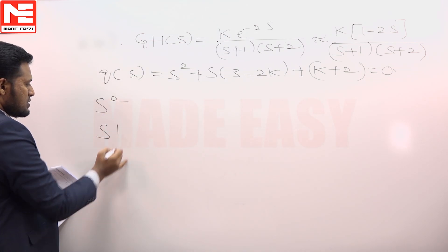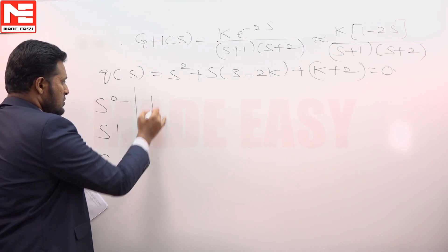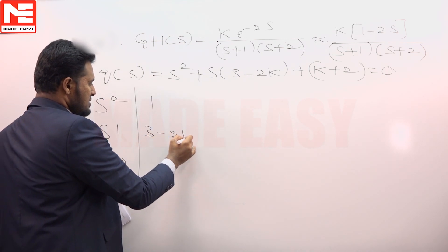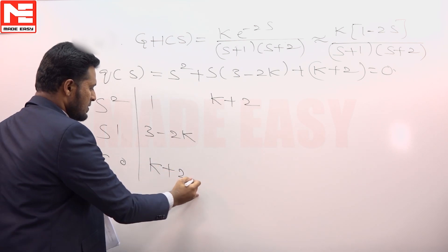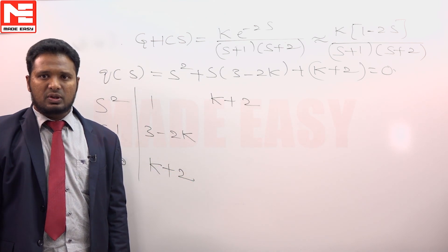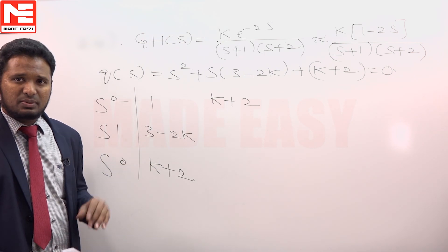Forming the Routh array: s square, s power 1, s power 0; 1, 3 minus 2K; K plus 2, K plus 2. For a system to be stable, all the elements of the first column of the Routh array must have same sign.